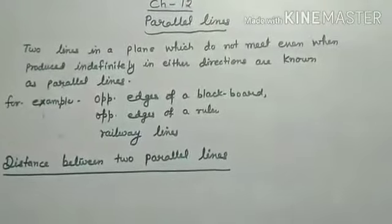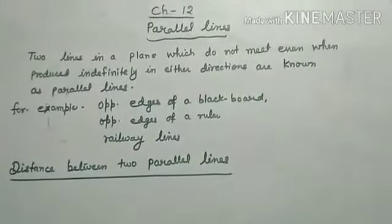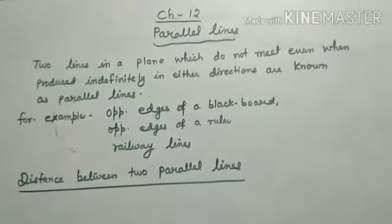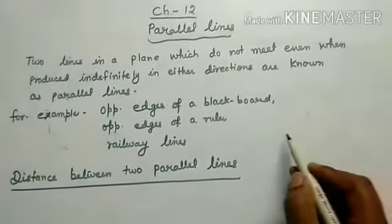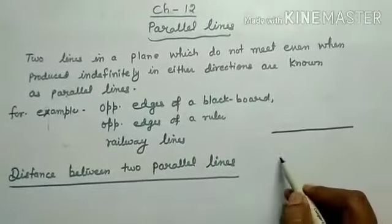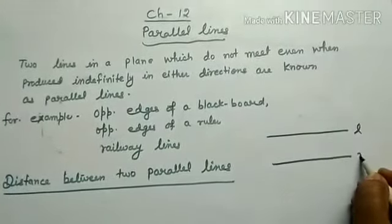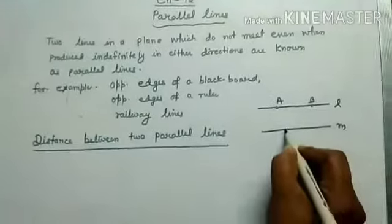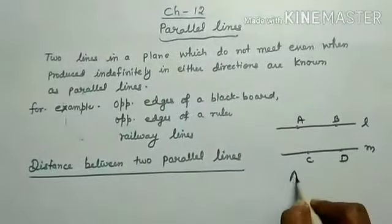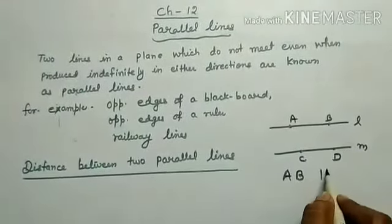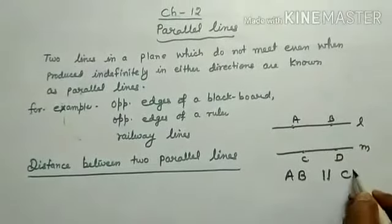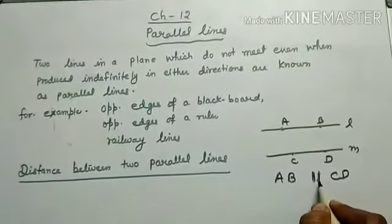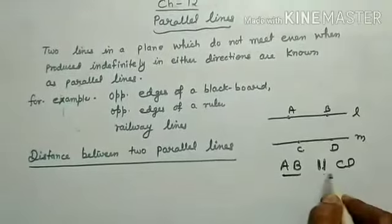The two lines in a plane which do not meet even if produced indefinitely in either direction are known as parallel lines. Suppose one line and another line, this is L and M. Point A and B, and this point is C and D. So AB parallel, this is the parallel sign. All of you know this is the parallel symbol. So AB parallel to CD.